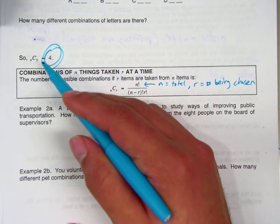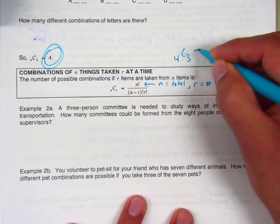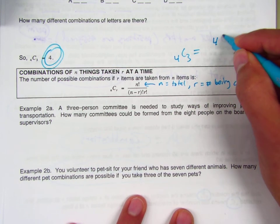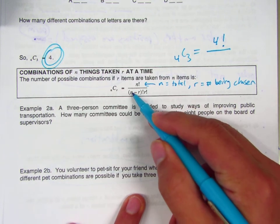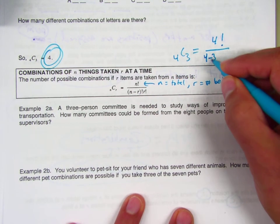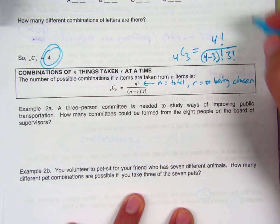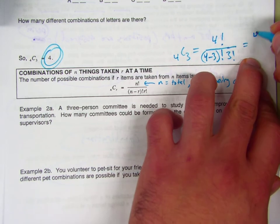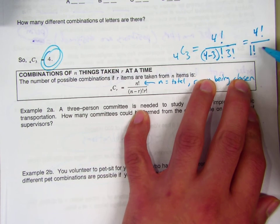So if we actually applied the scenario here, if I did 4C3 and did the formula, it would be 4 factorial divided by N minus R, which is going to be 4 minus 3 factorial, and then R factorial, which is 3 factorial. So this essentially becomes 4 factorial over 1 factorial times 3 factorial.